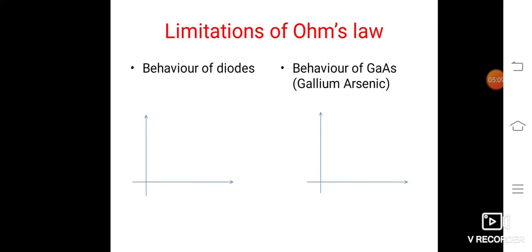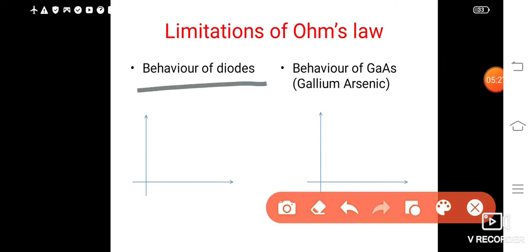The next concept is limitations of Ohm's law. Here, Ohm's law is not universally true for every object. When we look at behavior of diodes.